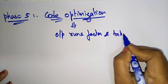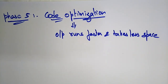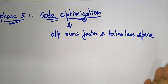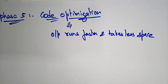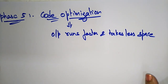The code optimization phase improves the intermediate code so the output runs faster and takes less space. It removes unnecessary code lines and arranges the sequence of statements in order to speed up the program without wasting CPU resources. The main aim is to remove unnecessary code lines and arrange statements so the program speeds up without wasting resources.